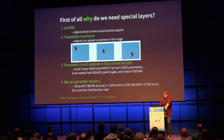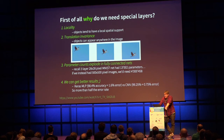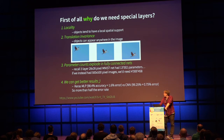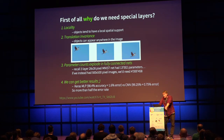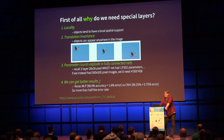One reason we need special layers is that parameter counts explode in fully connected networks. That three-layer 28 by 28 MNIST net had 13,000 parameters, but with 500 by 500 pixel images we'd need on the order of 4 million parameters. Convolutions help reduce the total number of parameters required, and we get better results. A Keras multi-layer perceptron gets 98.4% accuracy on MNIST — a 1.6% error rate — but a convolutional network gets 0.75% error, more than half the error rate.